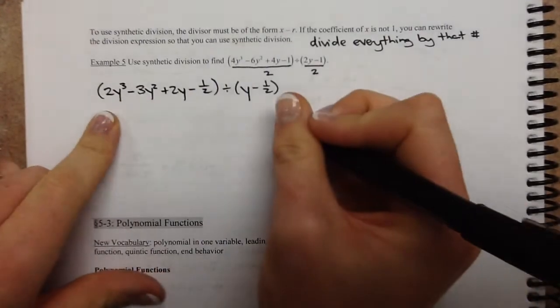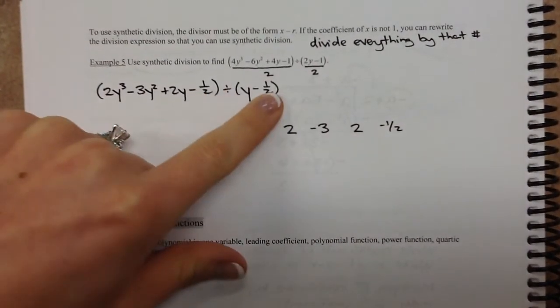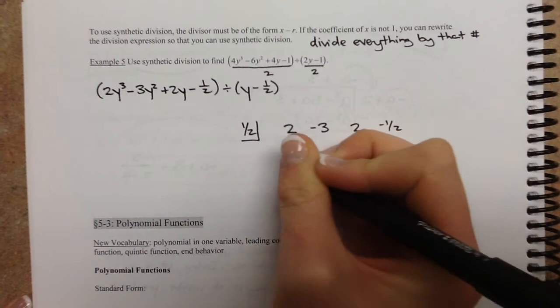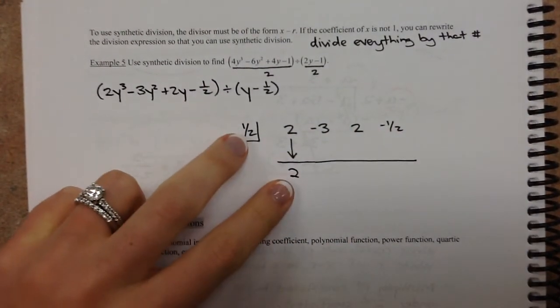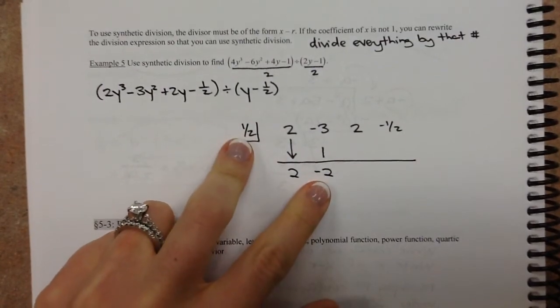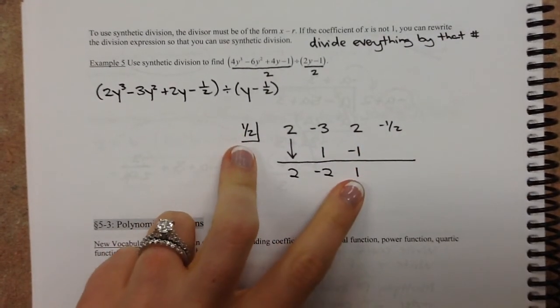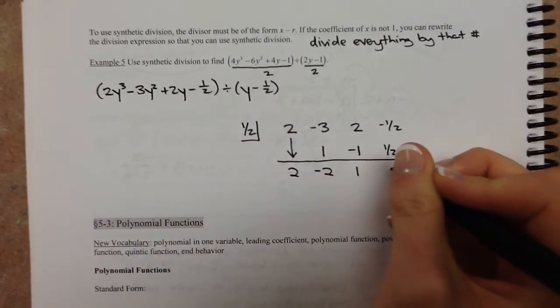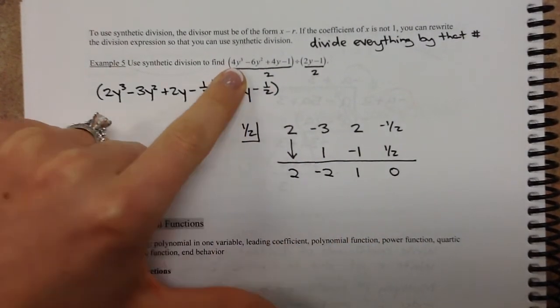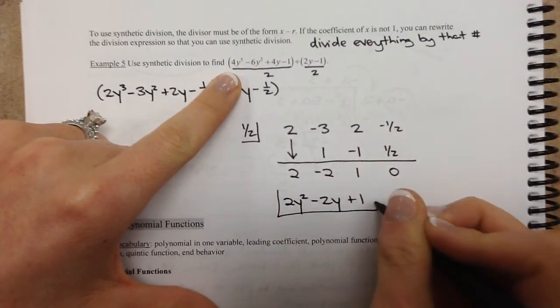So we take our coefficients in descending order: 2, negative 3, 2, and negative 1 half. Put the opposite of this number in a box, so 1 half. Now here's the algorithm. This number just goes down, and then we start our multiplying and adding. So multiply 2 times 1 half, we get 1. Add these two numbers together, I get negative 2. Multiply these two numbers together, I get negative 1. Add these together, I get 1. Multiply these two together, I get 1 half. And lucky for us, we add these together and we get 0, so that means there's no remainder. So now these are the coefficients of a polynomial with one less degree. So one less degree would be y squared. So I write 2y squared minus 2y plus 1. And there is no remainder. So that is your final answer.